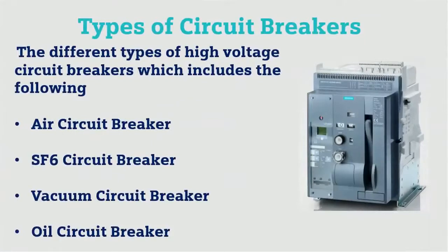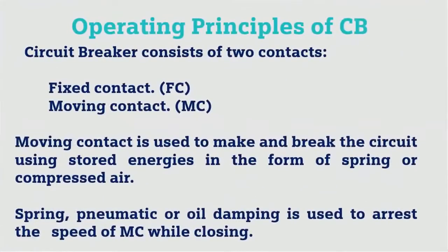Types of circuit breakers for high voltage applications include air circuit breaker, SF6 circuit breaker, vacuum circuit breaker, and oil circuit breaker. In this video we will discuss the air circuit breaker, as most industries are now using ACBs and they have replaced oil and other older circuit breakers.